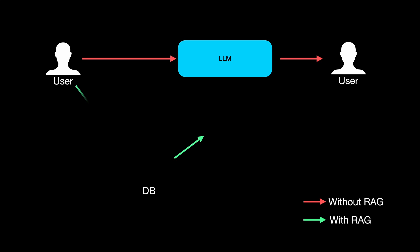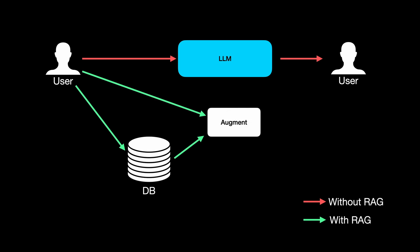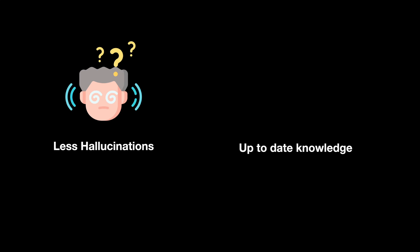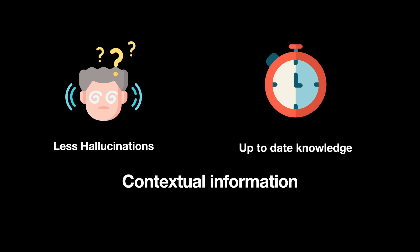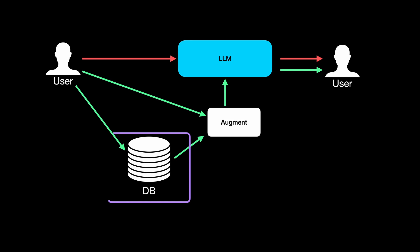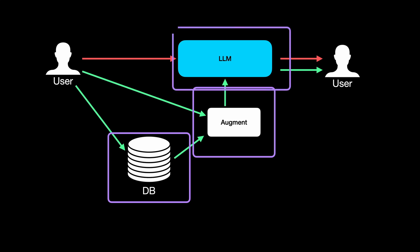With RAG, we introduce a database of knowledge. Every time the LLM receives a request, the database is queried and the data retrieved from the database is augmented to the prompt received from the user. The augmented or combined input is then fed to the LLM, which responds with much better contextual information. This reduces hallucinations because the LLM gets more contextual information about the user's prompt, and the database can also bring in up-to-date information. This process — retrieval, augmentation, and generation — is what makes it Retrieval Augmented Generation.